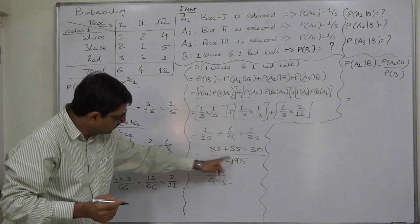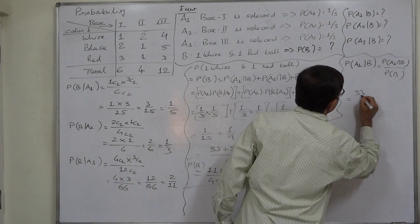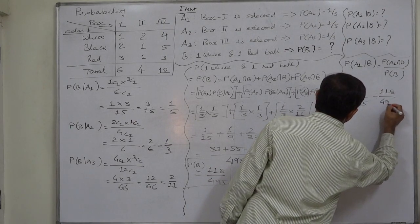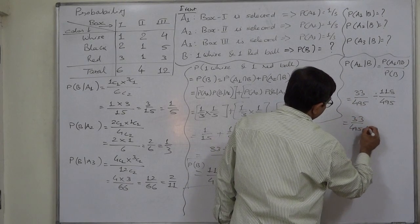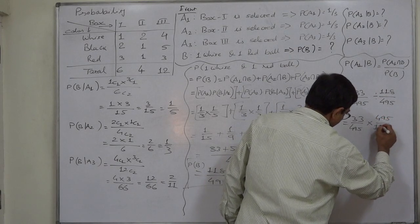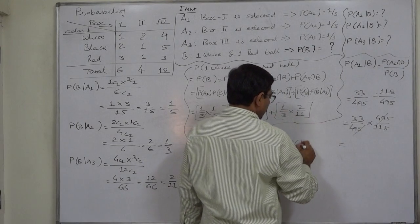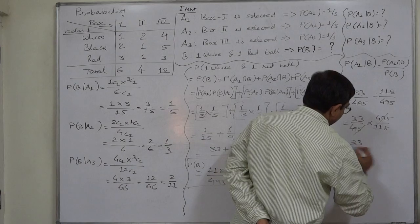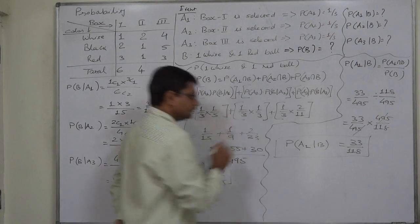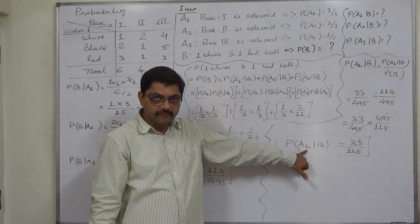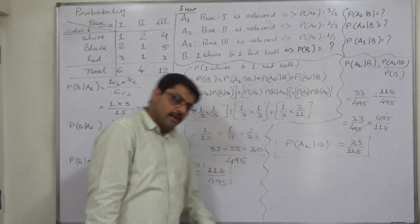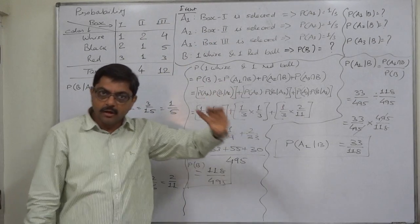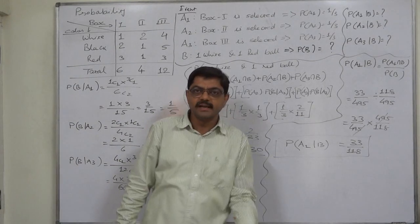P(A1|B) = P(A1 ∩ B) / P(B) = (33/495) / (118/495) = 33/495 × 495/118 = 33/118. So the probability that the balls came from the first box, given one white and one red ball was drawn, is 33/118. This is called the revised probability of selecting the first box, or the inverse probability — because we calculated the probability of a particular box being selected based on the knowledge of the event of selecting one white and one red ball.